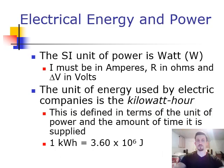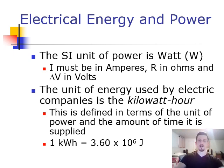Just to review electrical energy and power: the SI unit of power is the Watt. Whenever you're solving for power, you need your current I to be in amperes, your resistance to be in ohms, and your voltage to be in volts — everything has to be in base units. The unit of energy used by electric companies is the kilowatt-hour, which is defined in terms of the unit of power, kilowatts, and the amount of time it is supplied, which is hours. One kilowatt-hour is equal to 3.6 times 10 to the 6th joules.